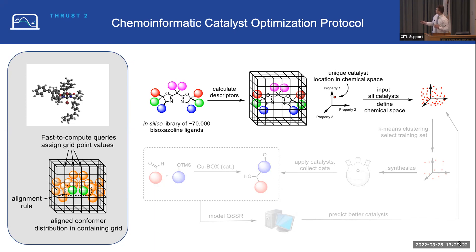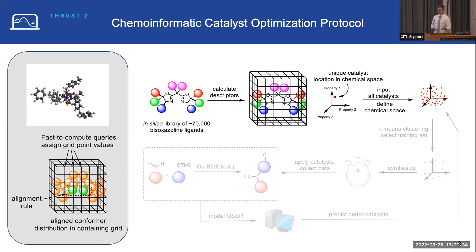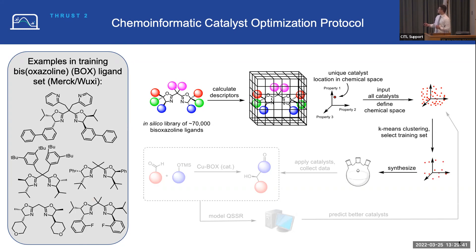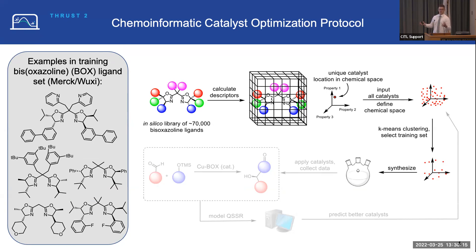We calculate these properties for all of our catalysts, define an in silico chemical feature space, and apply clustering methods to identify a maximally representative subset — what Professor Doyle was alluding to earlier. For my project, we used k-means clustering: projected to a latent space and then clustered to come up with a training set. There were 24 in total that were selected. To give a sense of the diversity, we have all kinds of different aryl substituents on R4 of the oxazoline, as well as alkyls and some saturated heterocycles — a set we believe is very representative of the catalysts we could make.